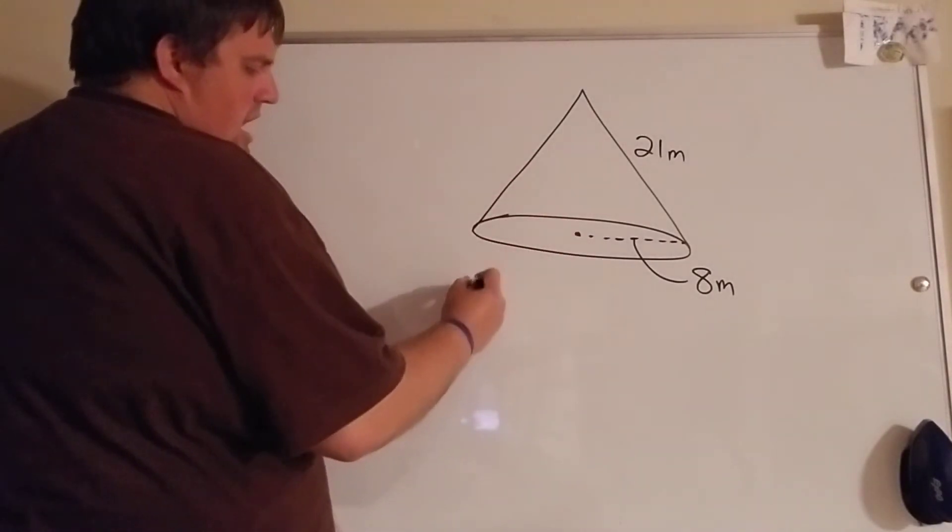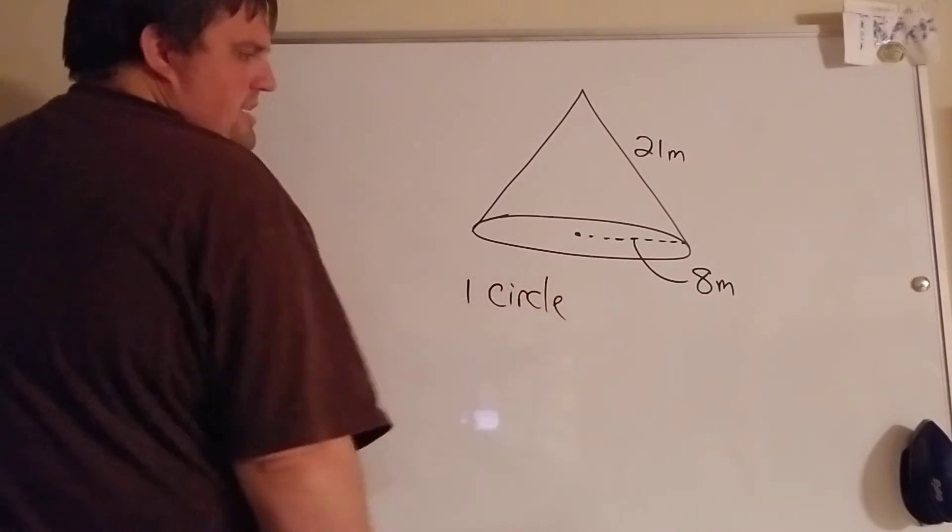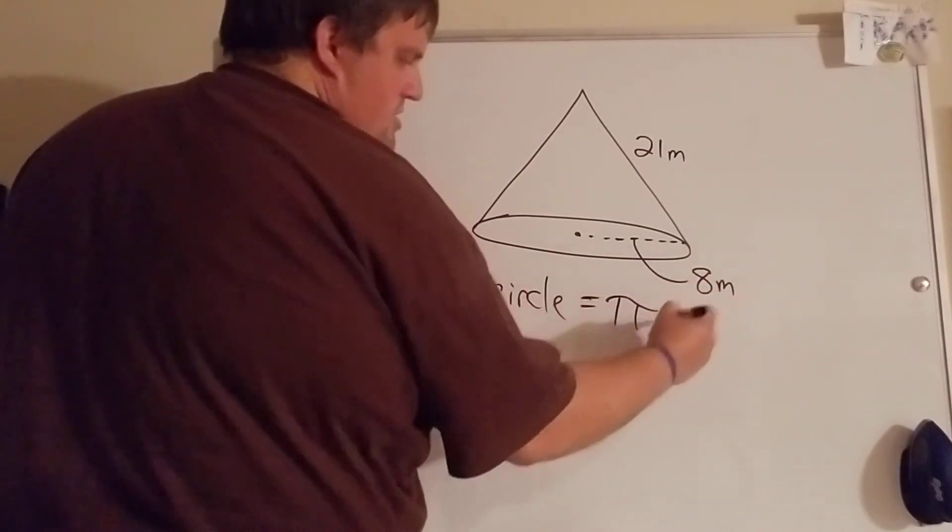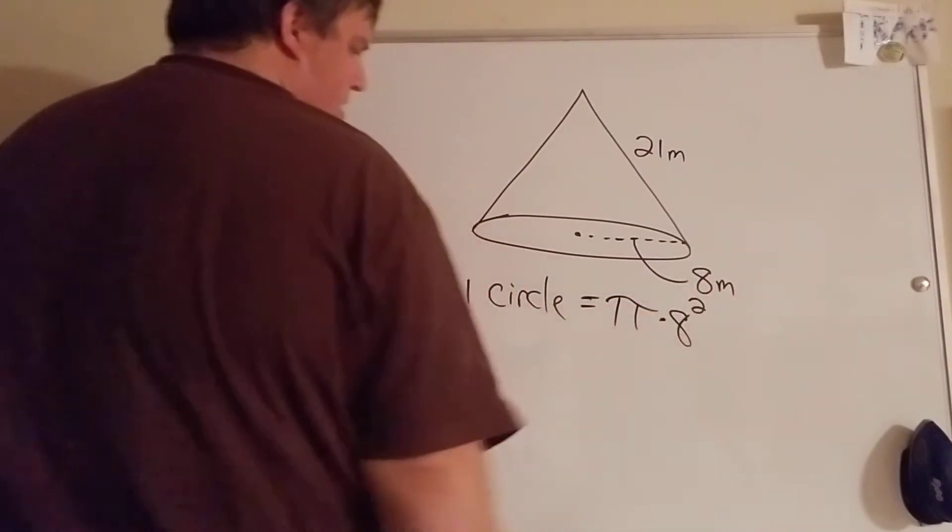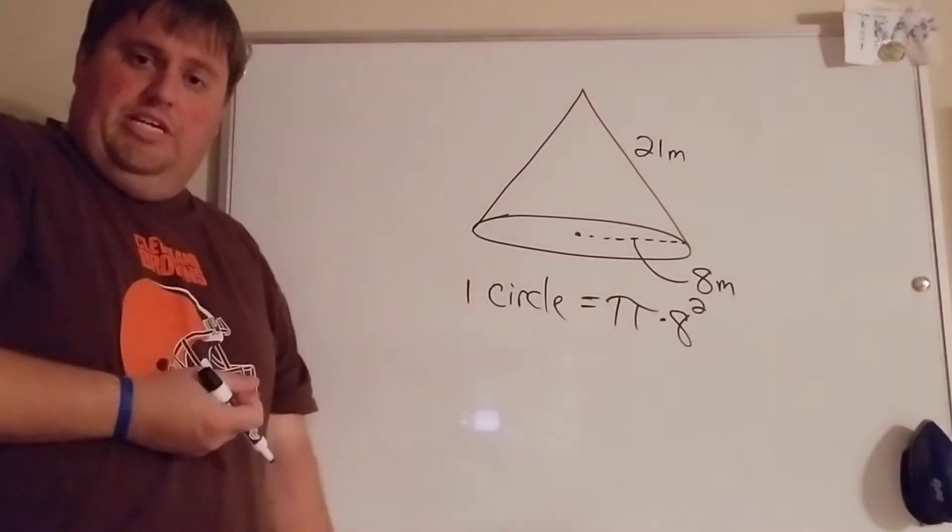So when we're talking about breaking this into shapes, I think that everyone can agree that we're gonna have one circle, that's the easy part. And that's obviously pi r squared, so pi times 8 squared.